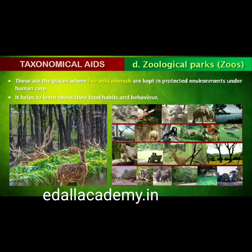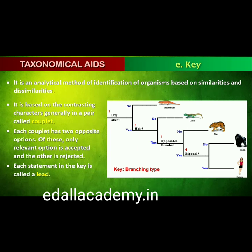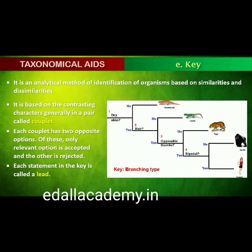Zoological parks are places where wild animals are kept in protected environments under human care, which enables us to learn about their food habits and behaviour. All animals in a zoo are provided, as far as possible, conditions similar to their natural habitats. Key is another taxonomic tool used for identification of plants and animals based on similarities and dissimilarities. Keys are based on contrasting characters generally in a pair called a couplet. Each statement in the key is called a lead. Separate taxonomic keys are required for each taxonomic category such as family, genus and species. Keys are generally analytical in nature.